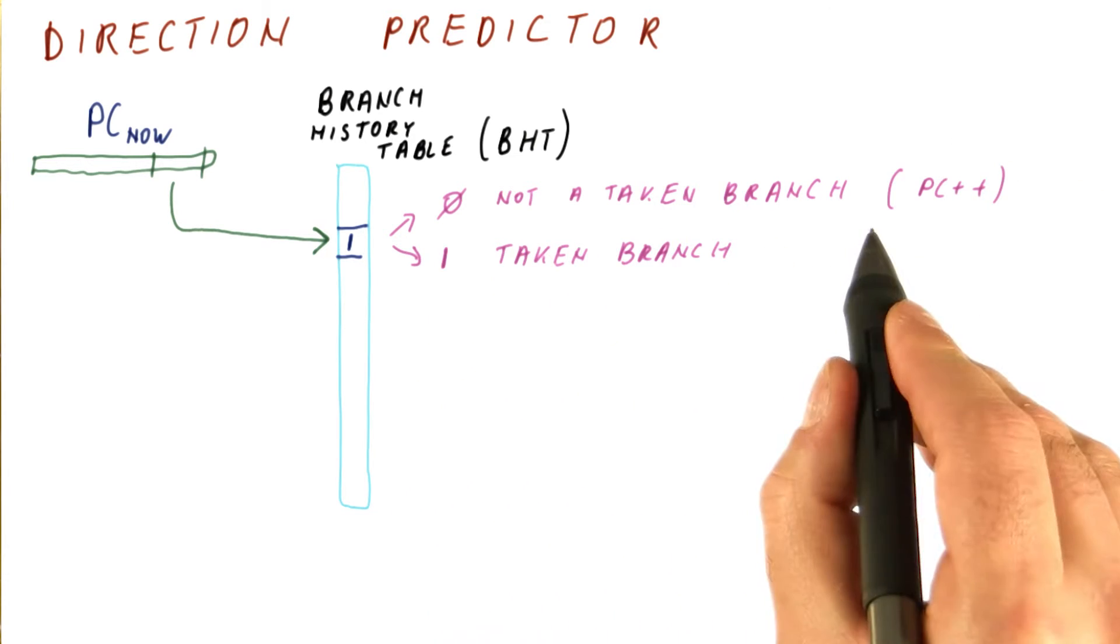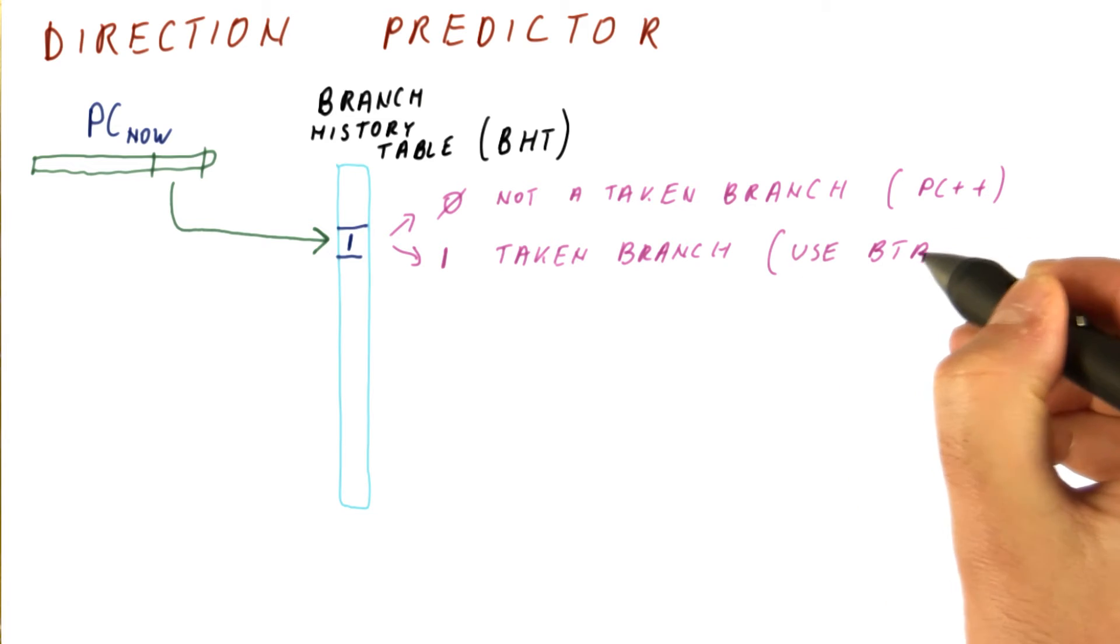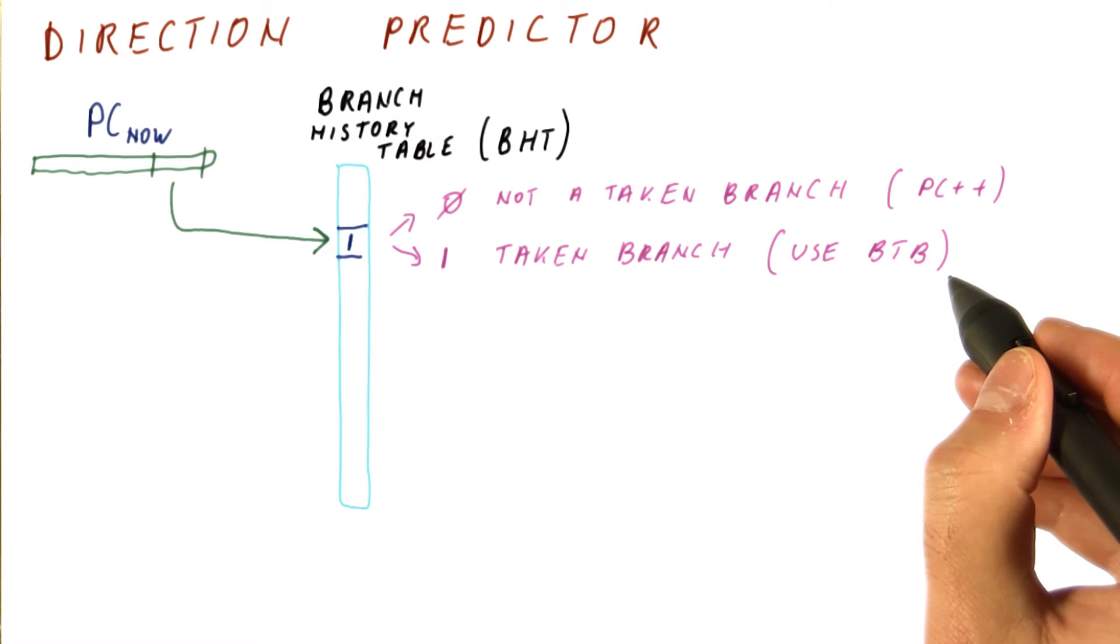If we get a zero from here, we just increment the PC. If we get a one, we use the BTB to tell us where to go.